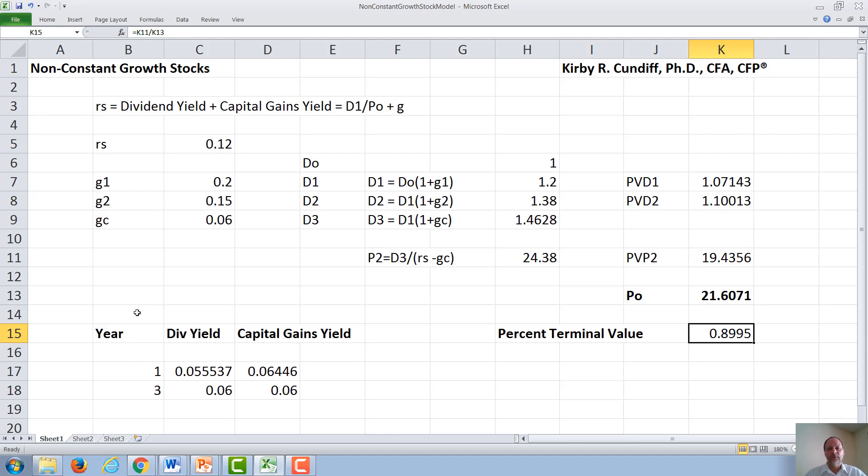It is also interesting to examine how the dividend yield and the capital gains yield vary throughout the life of the growth of the stock. The total required rate of return of a stock is the dividend yield plus the capital gains yield. In our first year, the dividend yield will be D1 of 1.2 divided by the price of the stock of 21.61, or 5.5%.